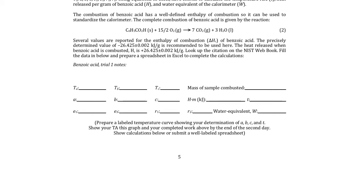Our basic experiment begins with benzoic acid as our standardization material. We're provided with the enthalpy of combustion relatively precisely for benzoic acid: minus 26,425, plus or minus 0.002 kJ per gram. That's the known enthalpy of combustion of benzoic acid. For benzoic acid, we begin with this particular value as the quantity that we know so we can try to solve for our water equivalent.